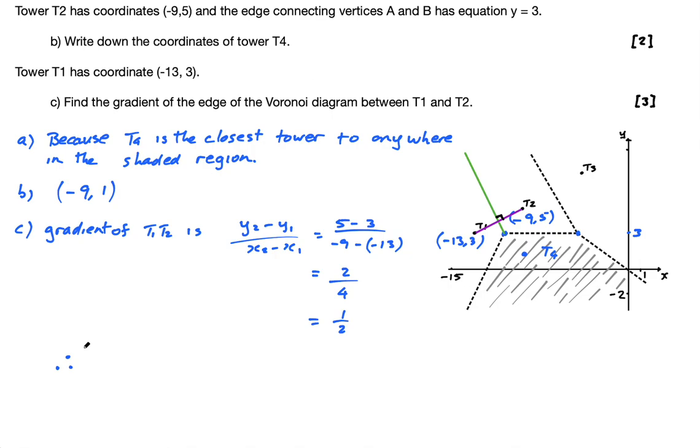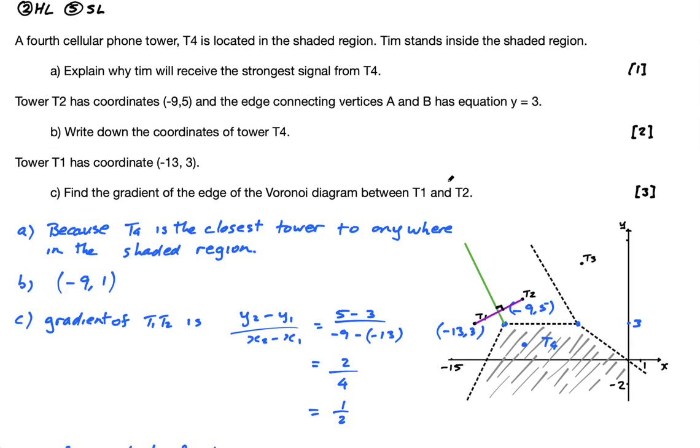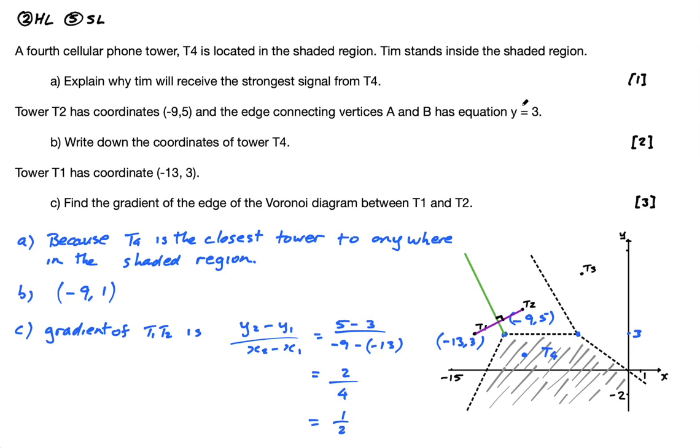Therefore, the gradient of the edge is perpendicular to this, so this gradient is a half, that's 1 over 2. What's the perpendicular gradient? Well, we flip it and change the sign. So the gradient of edge is negative 2, because it would be negative 2 over 1, which kind of makes sense if you look at it, that has a gradient of negative 2. Okay, that is question 2 for HL and 5 for SL.